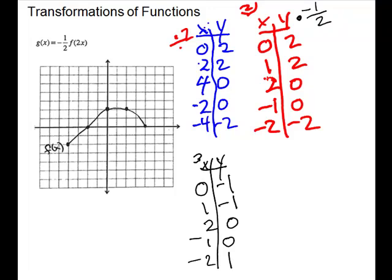Write those if you need them. And now this is what I'm going to graph. This will be my new graph. So 0, negative 1. So don't go over. Go down 1. 1, negative 1. 2, 0, negative 1, 0, and negative 2, 1.